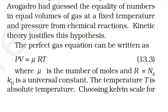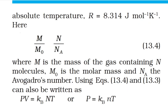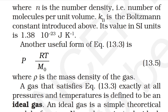The perfect gas equation can be written as PV = μRT, where μ is the number of moles and R = NA·kB is a universal constant. The temperature T is the absolute temperature on the kelvin scale. R equals 8.314 joules per mole per kelvin. Using these equations, this can also be written as PV = kB·N·T or P = kB·n·T, where n is the number density — the number of molecules per unit volume.